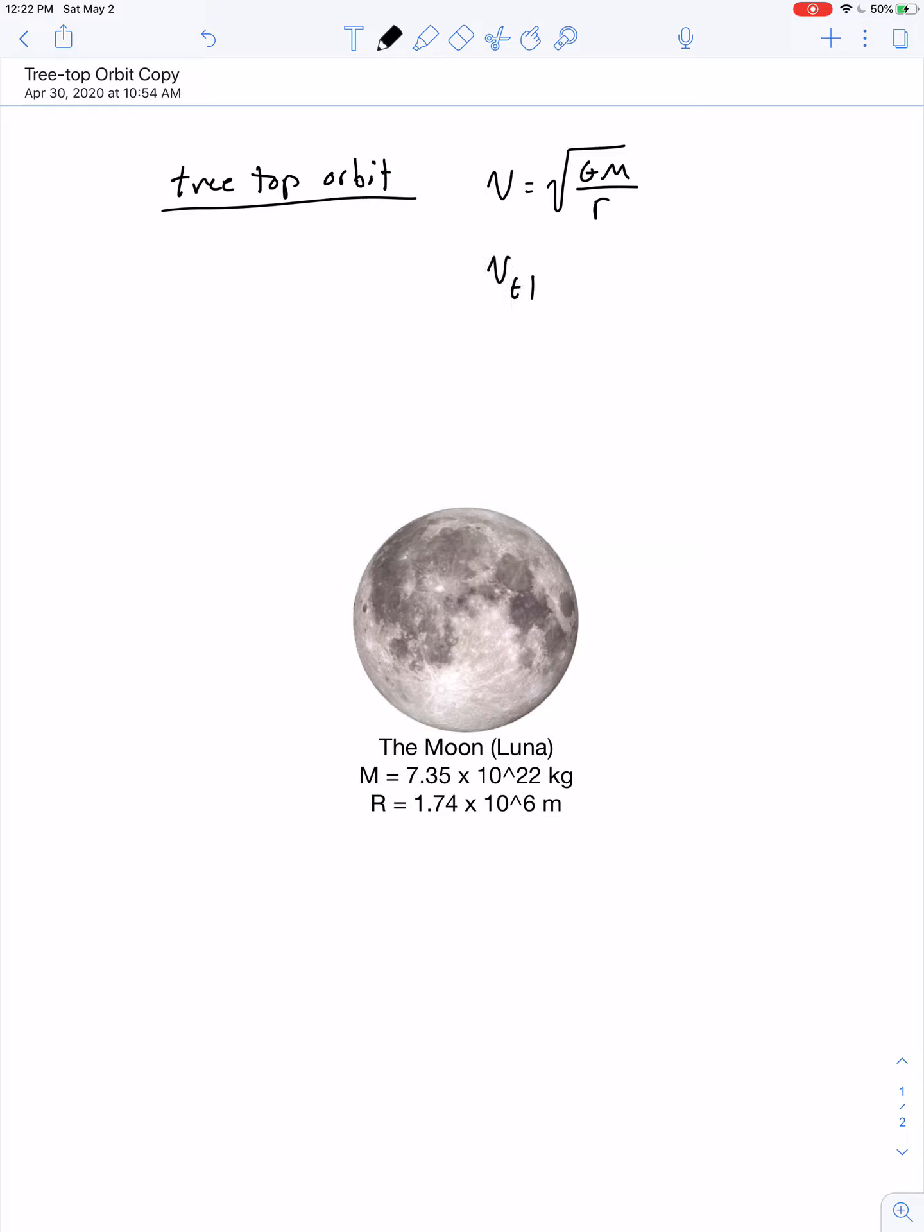For the case of the treetop orbit, all we have to do is replace lowercase r with capital R, implying that the satellite orbits at approximately an altitude equal to the radius of the planet itself, plus a minute amount to clear the treetops. For the Earth, that implies a treetop orbit of about 7,900 meters per second, which corresponds to a period of orbit about 90 minutes.